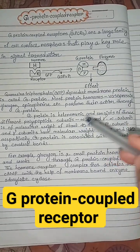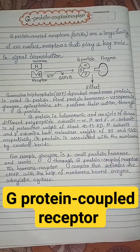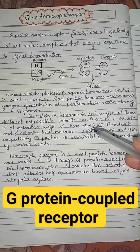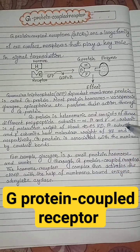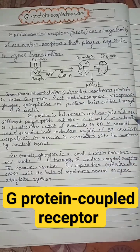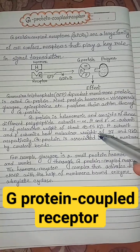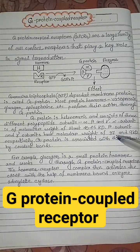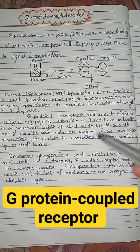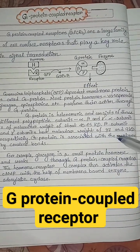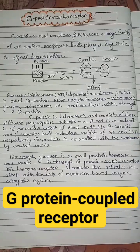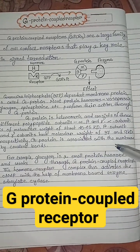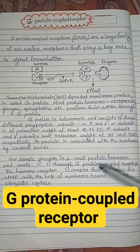G-protein is heteromeric and consists of three different polypeptide subunits: alpha, beta, and gamma. Alpha subunit is of molecular weight of about 40 to 45 kD. Beta and gamma subunits have molecular weight of 37 and 9 kD respectively. G-protein is associated with the membrane by covalent bonds.